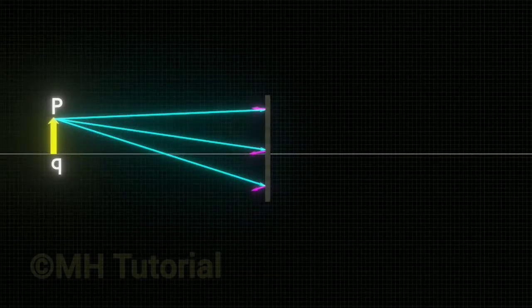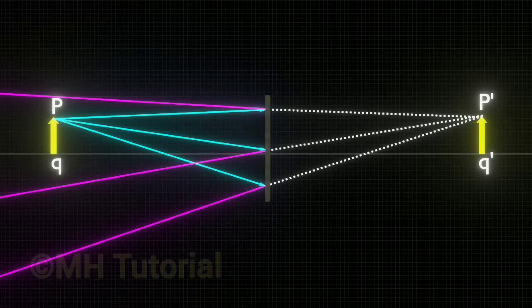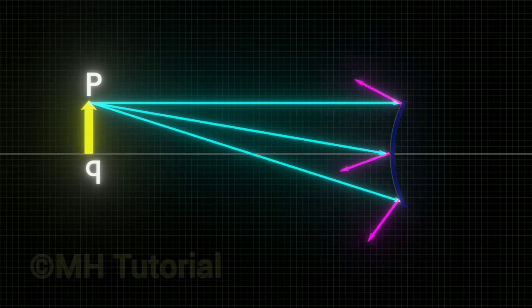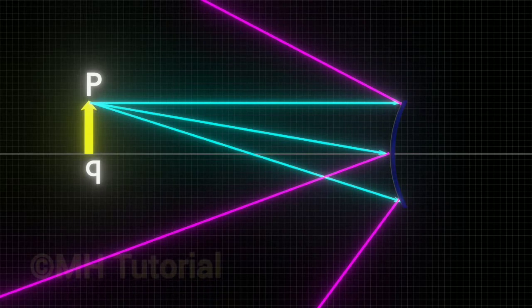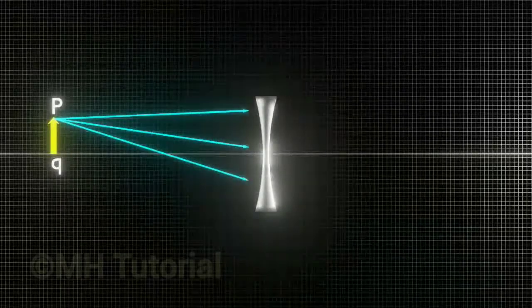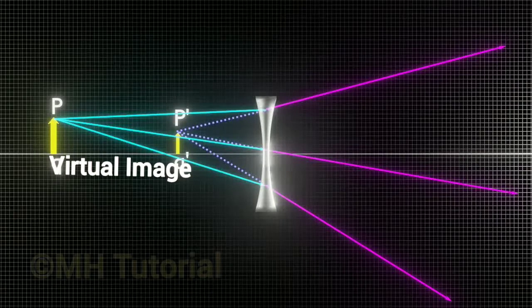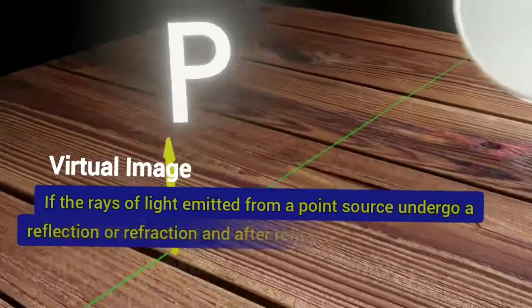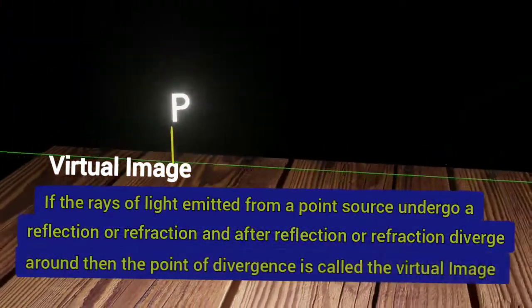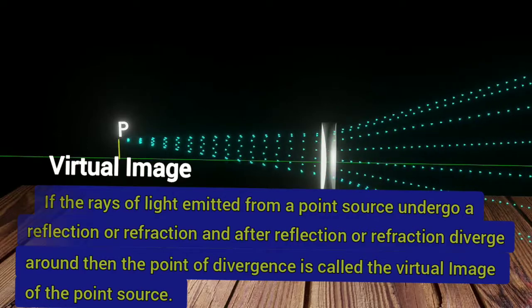What is a virtual image? In situation 1 with plane mirror, situation 2 with convex mirror, and situation 3 with concave lens, we saw that the rays are not converging but diverging instead. If you inspect the trajectories of the reflected or refracted rays, you may find a second point from which the reflected or refracted rays appear to be coming out. That second point is the virtual image of the first one. It is an imaginary point. The definition of virtual images: if the rays of light emitted from a point source undergo reflection or refraction and after that diverge, then the point of divergence is called the virtual image of the point source.